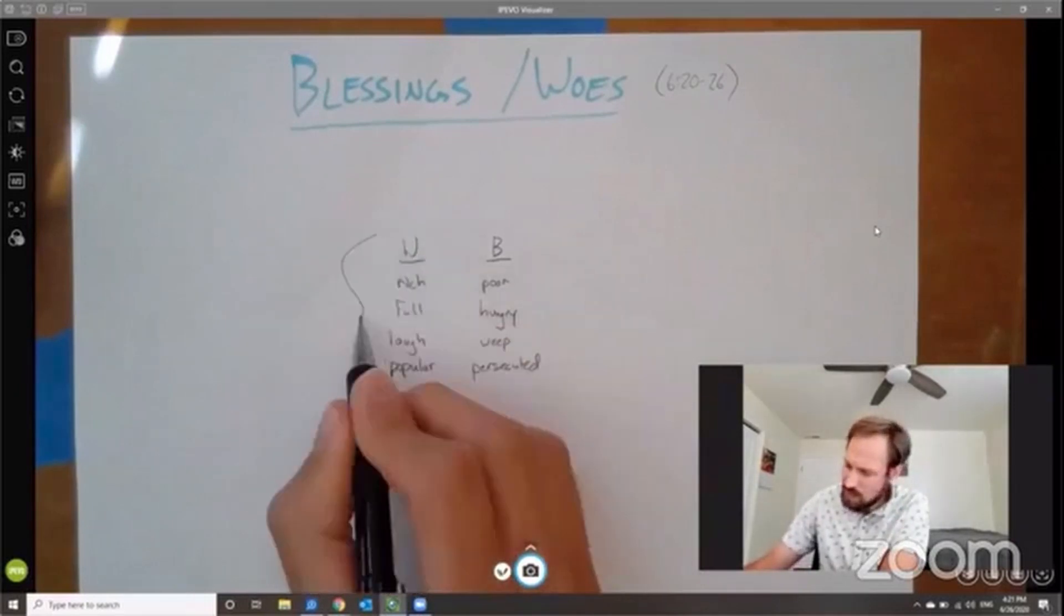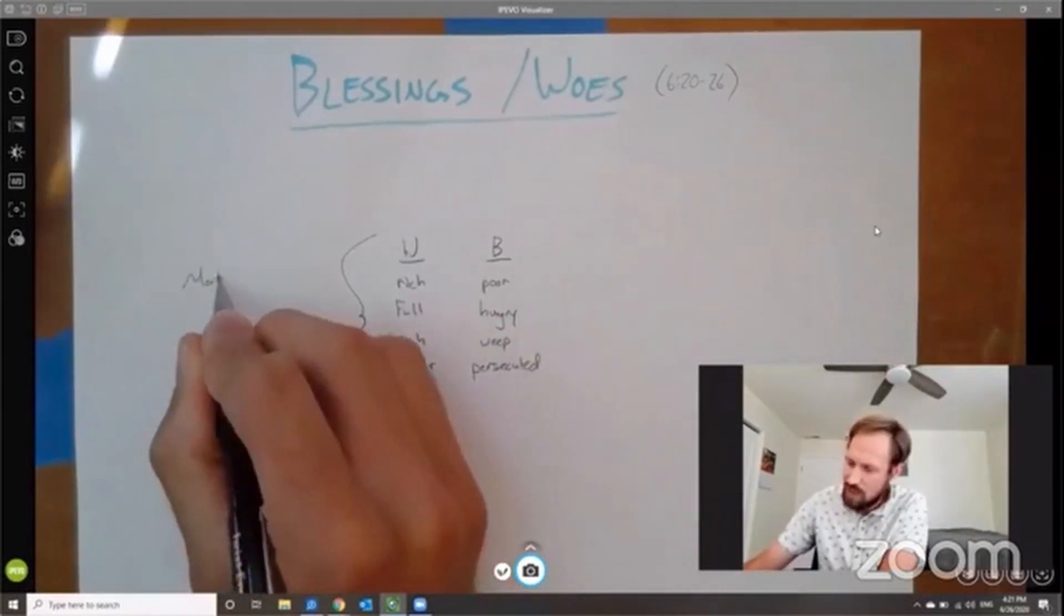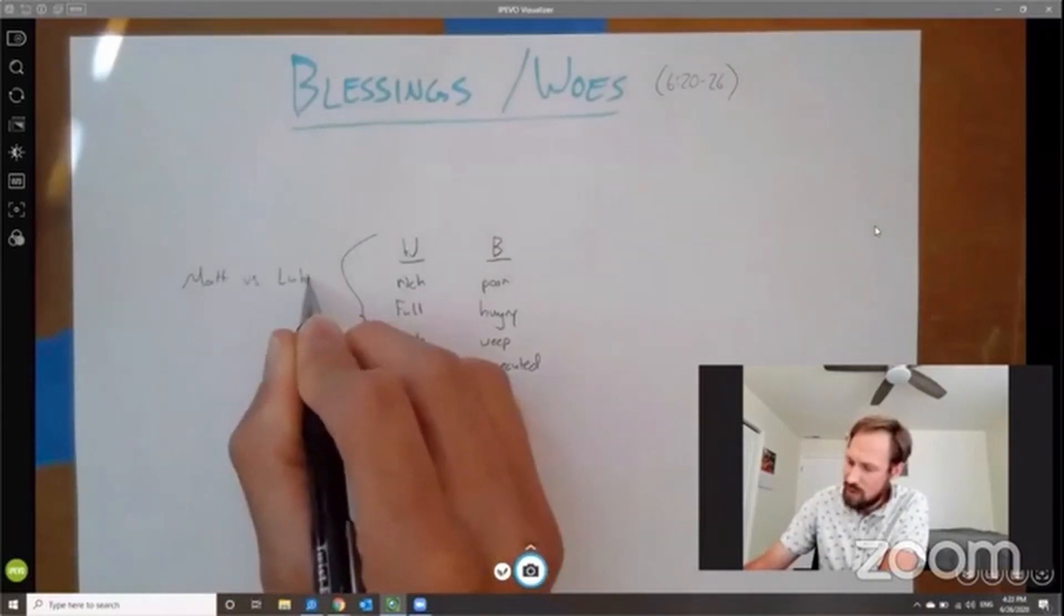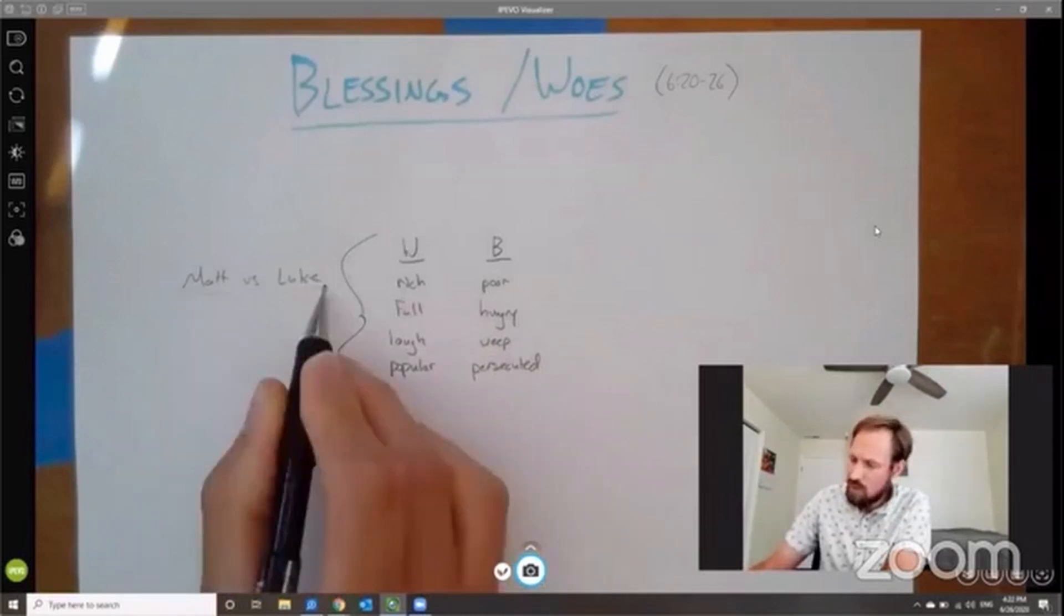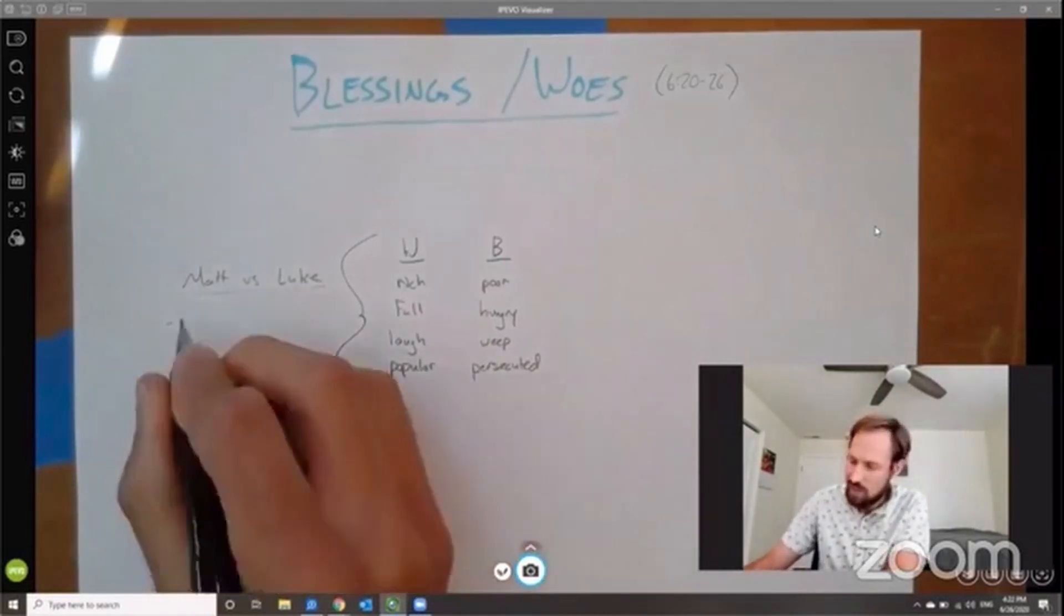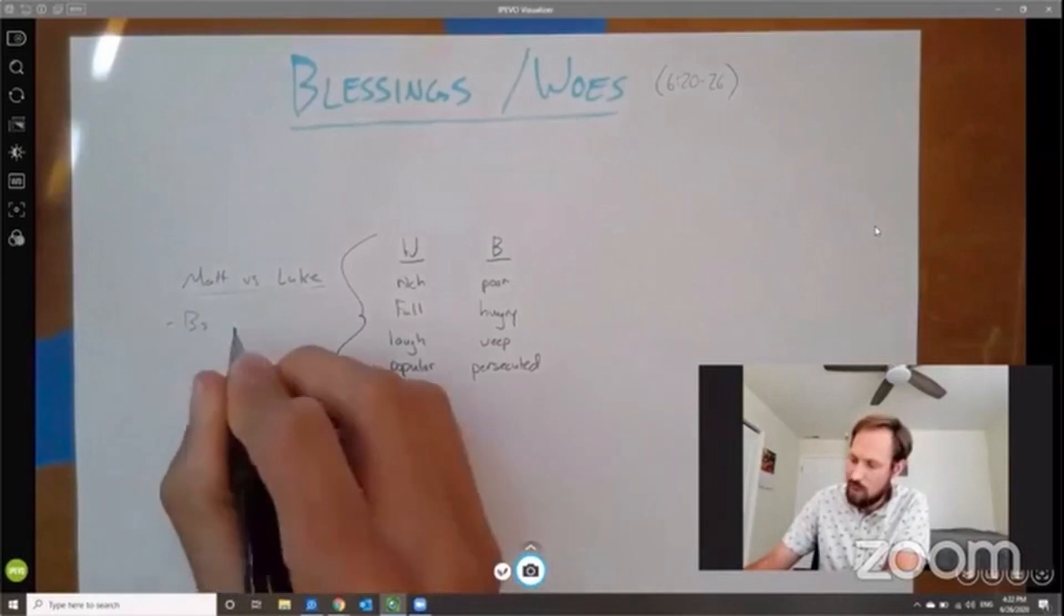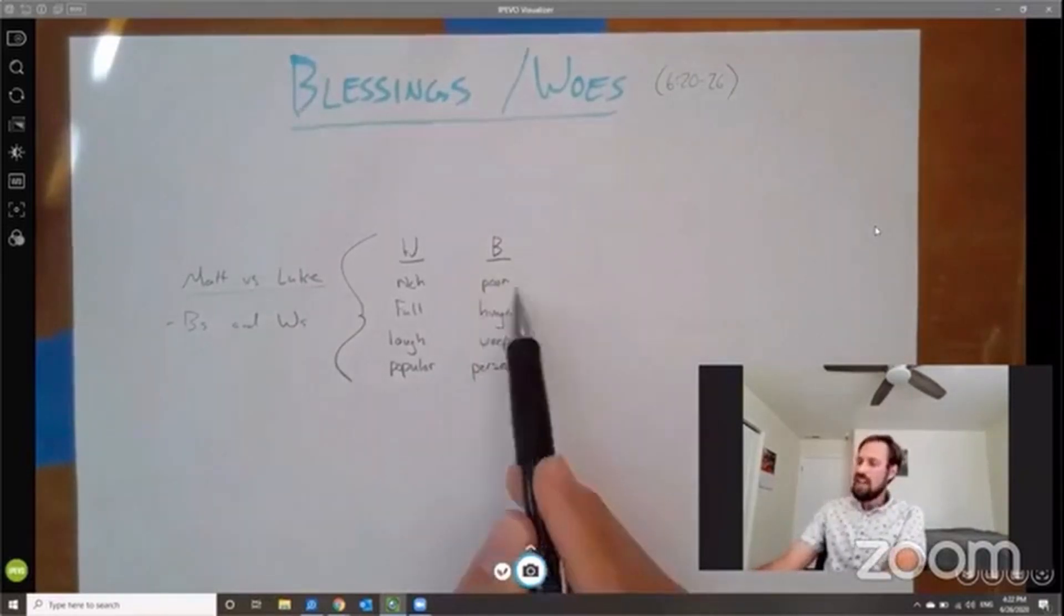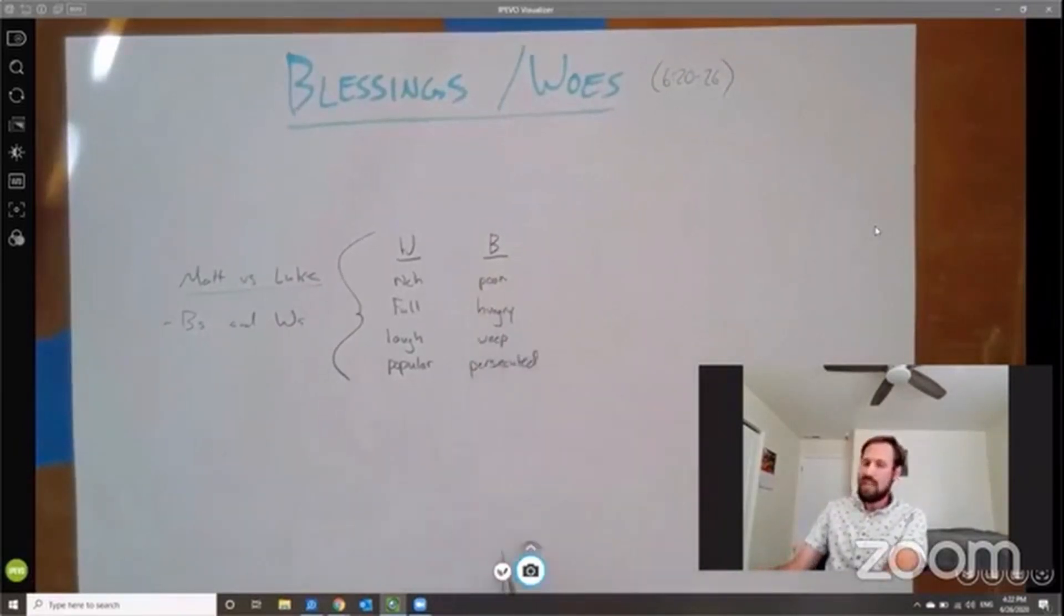So let's take a look at how these differ from the Beatitudes in Matthew. So what's interesting is a couple things. We'll make note of a couple things. First, in Luke, we have both blessings and woes. That's kind of interesting. In Matthew, we have eight blessings or eight Beatitudes and zero woes. And in Luke, we have four of each.